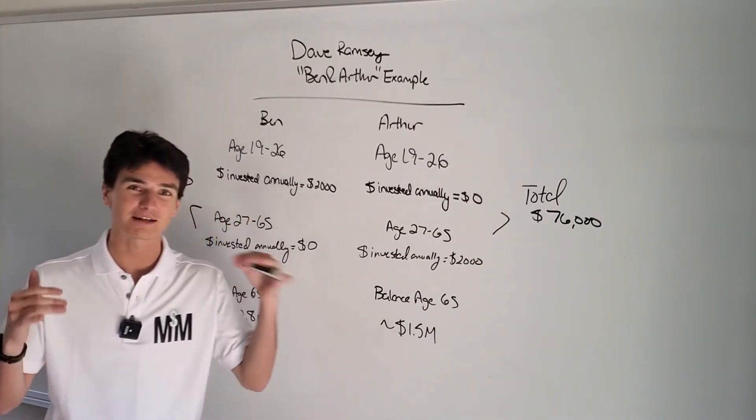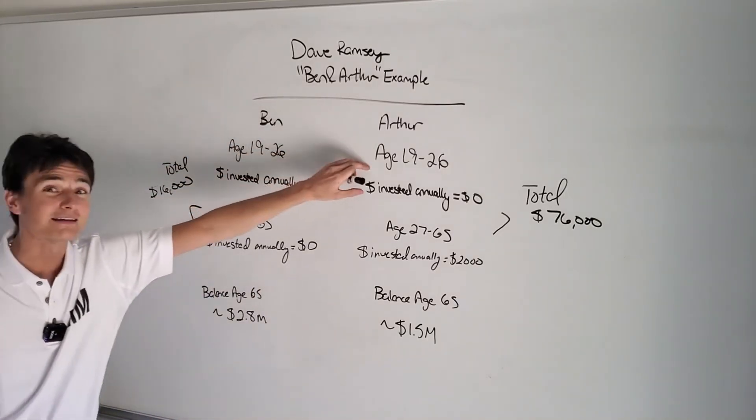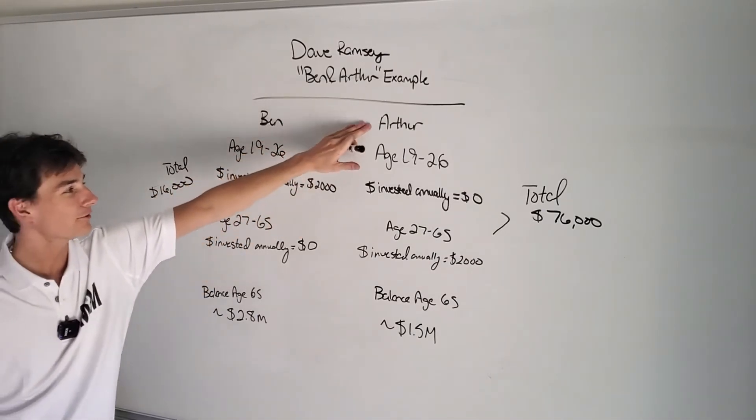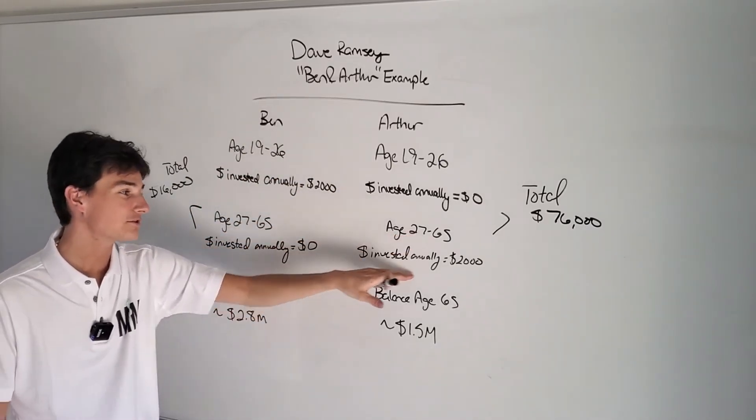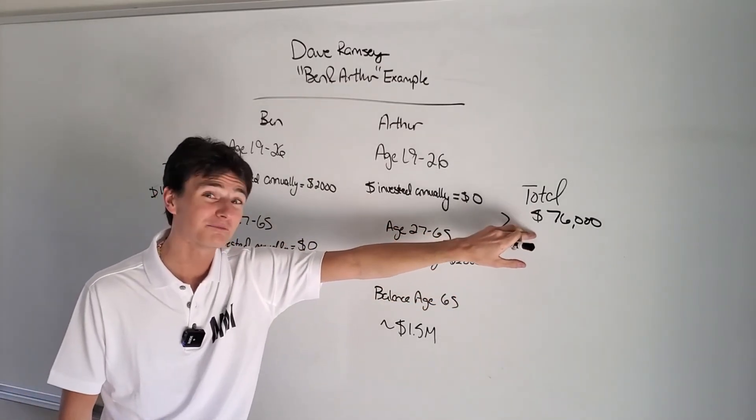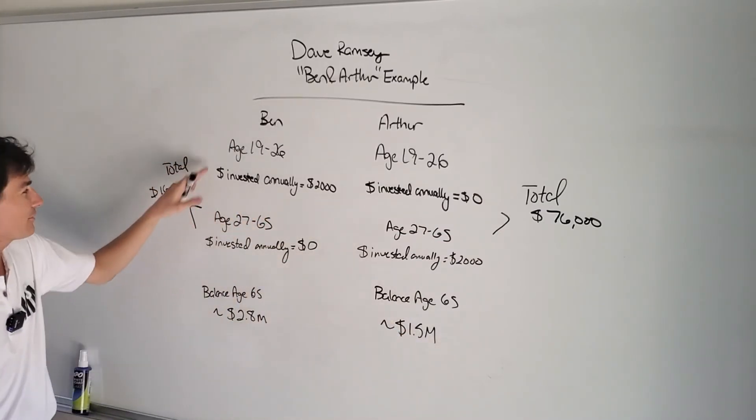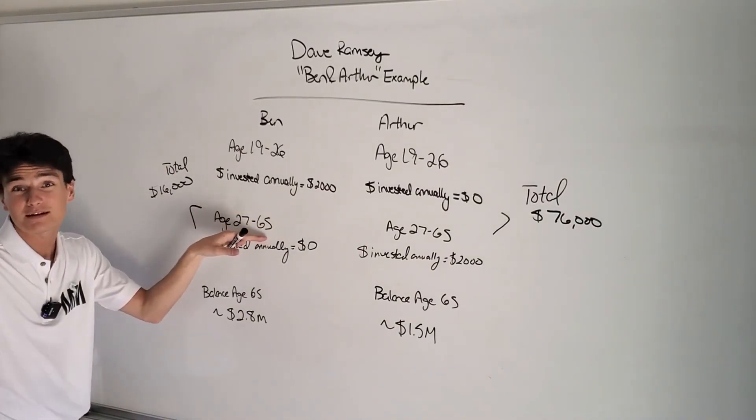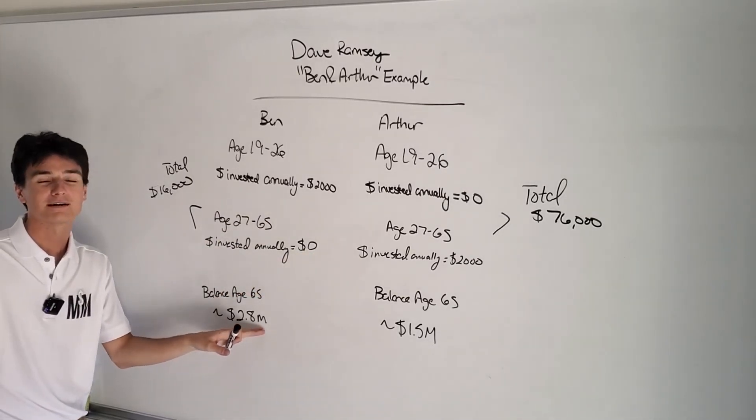It just shows you how starting early and how length of time has a much bigger impact than how much you're actually putting in every year. This concept is insane. I feel like I'm repeating myself, but I do want to make this extremely clear. Ben and Arthur, same age. One of them decided to invest early, only for six, seven years. Arthur decides to waste that time, and then maybe when he gets older, he decides, oh, I need to catch up. This guy puts in four times over the amount of money and has $1.3 million less to show for it. This guy was smarter, decided to invest earlier, and then took the rest off. He just decided, why do I need to invest anymore? I don't need to. He invested no more money, and he has a higher balance.